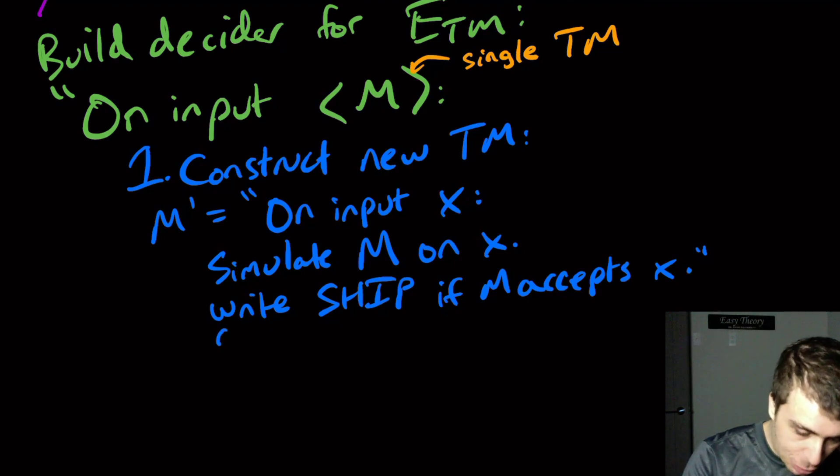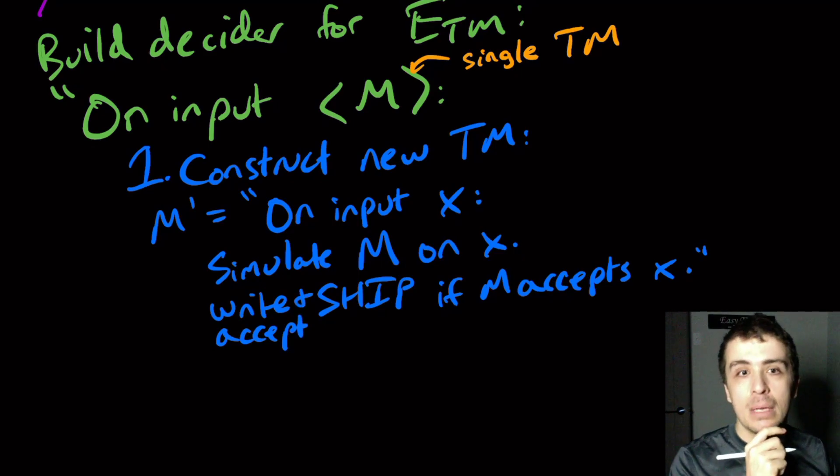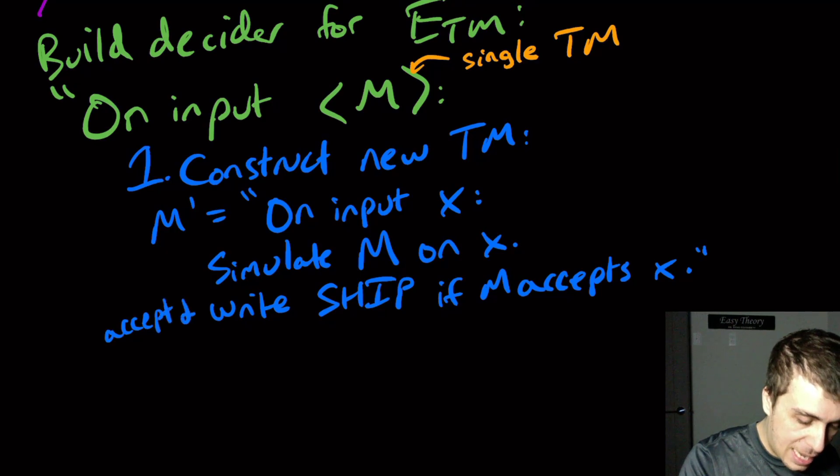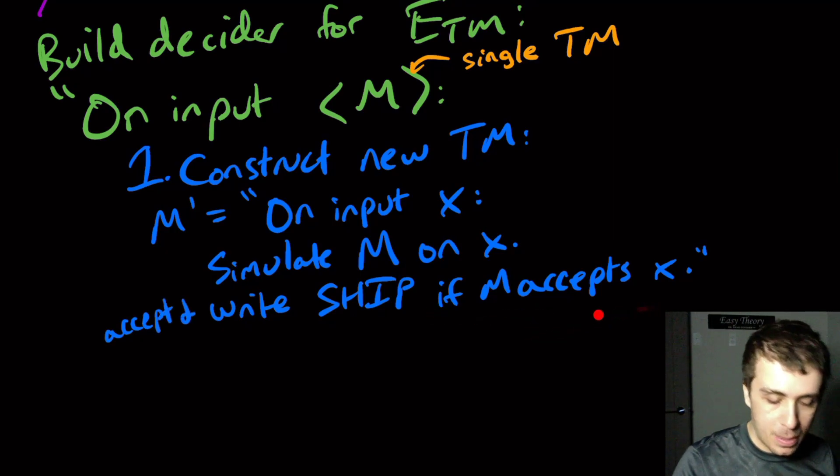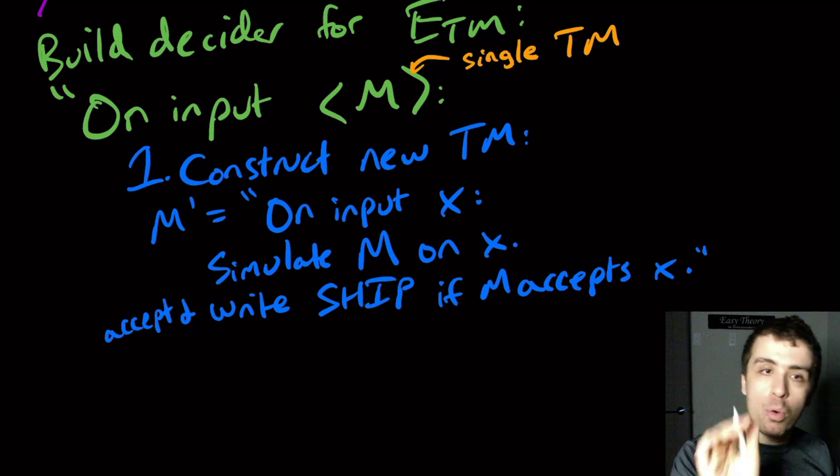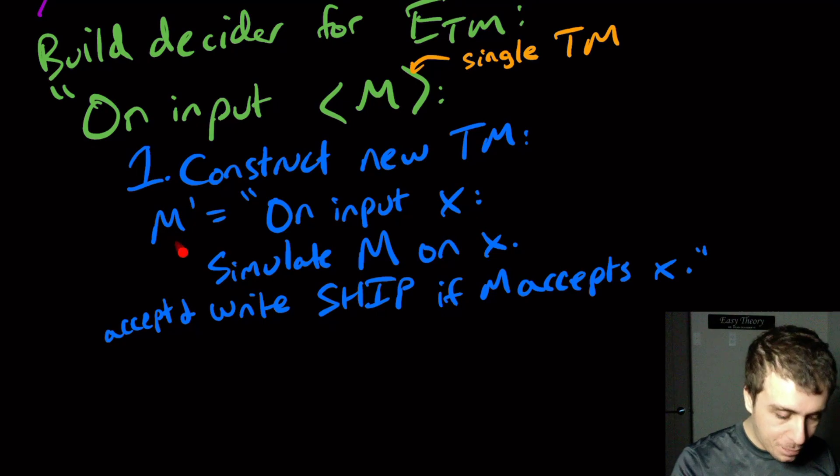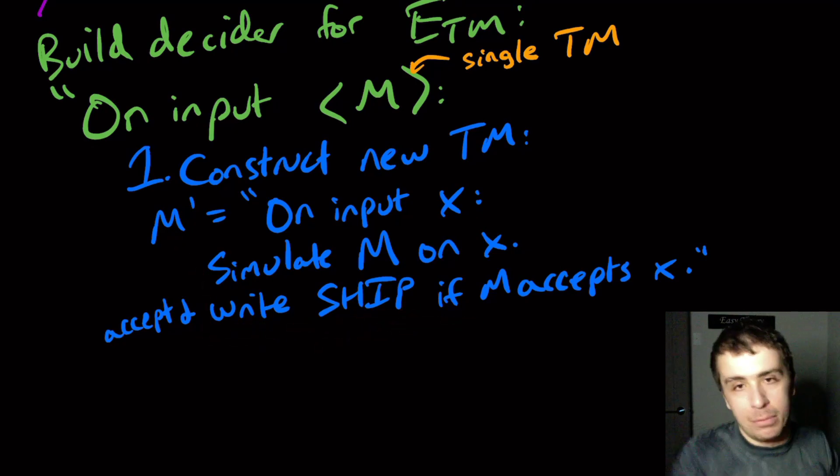And actually we should say accept here as well. Write and accept. So I will say accept and write the word ship if M accepts x. It's important that the M prime machine can actually accept here. It needs to accept here.